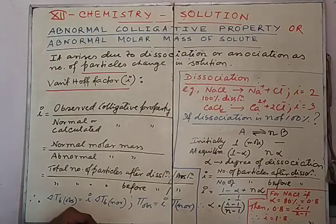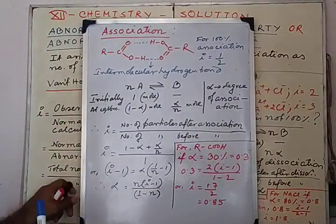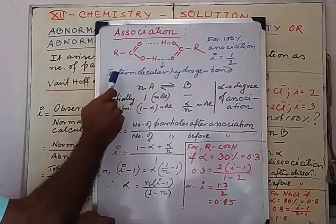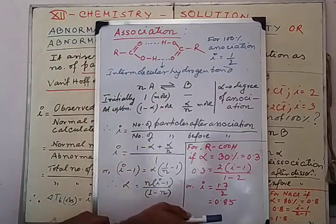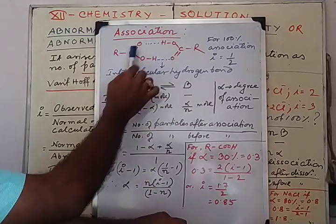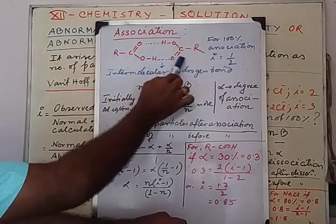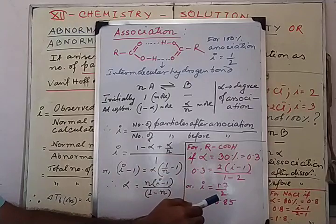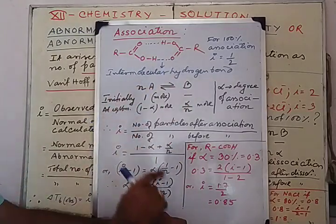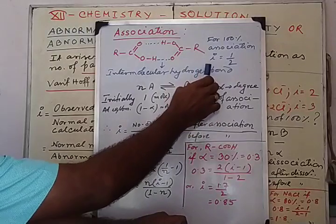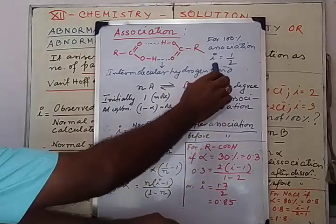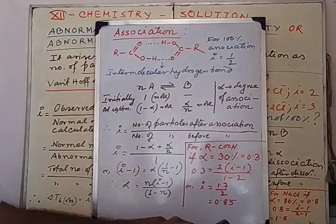Now let us consider the case of association. Take a carboxylic acid — for example, acetic acid. In aqueous solution, 2 moles of acetic acid become dimerized, meaning 2 molecules of acetic acid join via intermolecular hydrogen bonding. If 100% association takes place, from 2 molecules we get 1, so the number of particles becomes half. Therefore, the I value will be half (0.5) if 100% association is taking place.